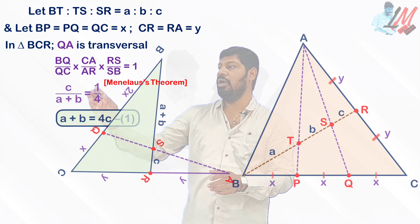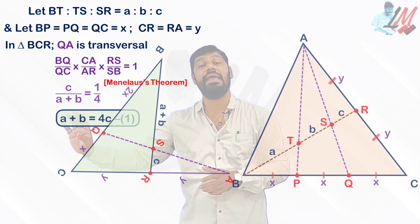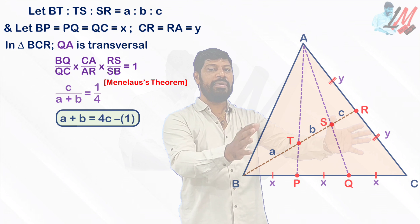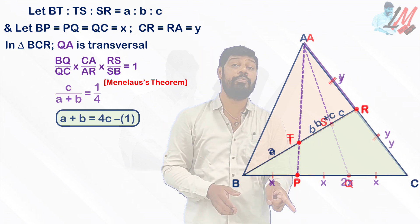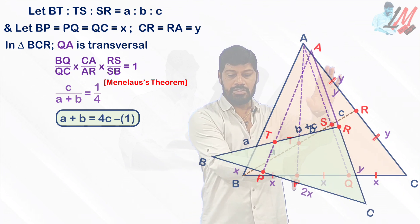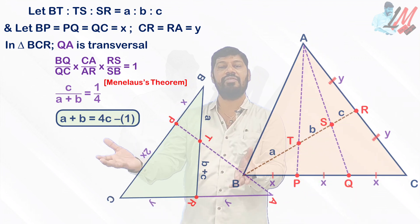So from this diagram we got this relation between A, B, C. Similarly, in the same diagram, if you consider the same triangle again BRC, now let me consider PA as transversal. So let me separate this one. Observe this carefully.